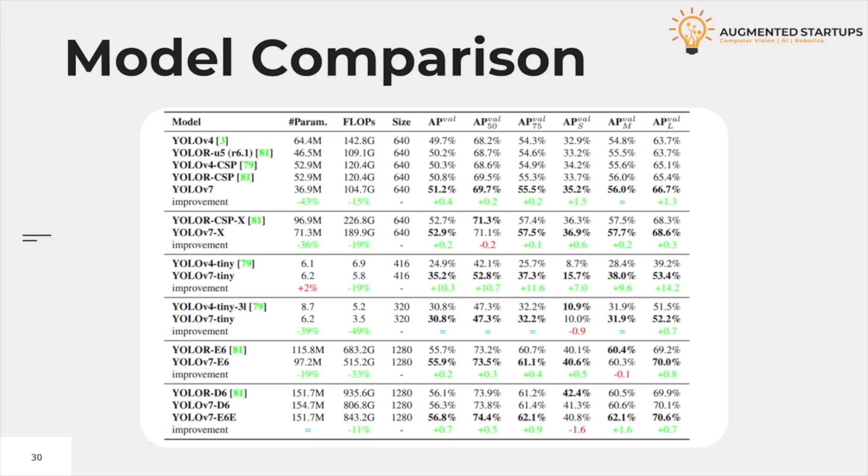Model comparison. This table shows us the number of parameters, average precision, average precision at IoU threshold 75, at small, at medium, and at large. Out of this, average precision at 50 is the standard value checked among different models and algorithms.